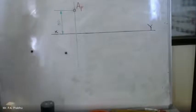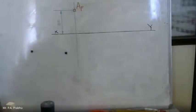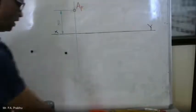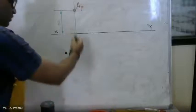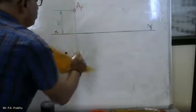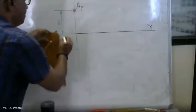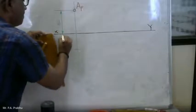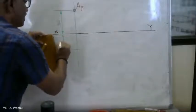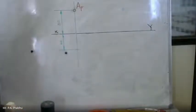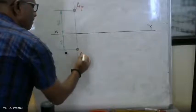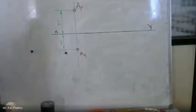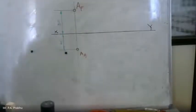Point A is 30mm above HRP and 20mm in front of FRP. In the front view, mark the point above the reference line at a distance of 30mm. On the same projector, take the distance of 20mm and mark the point — this is the top view of point A. So point A is 20mm in front of FRP and 30mm above HRP.